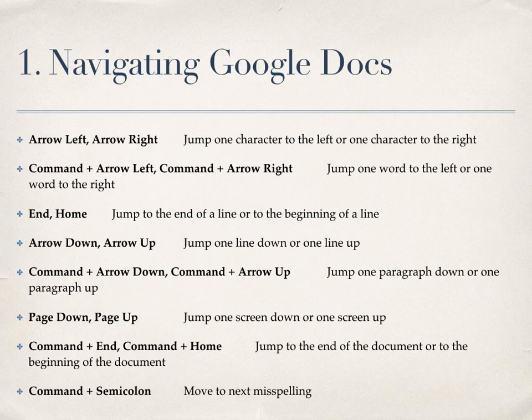Navigating Google Docs. Jump one character to the left or one character to the right: Command plus Arrow Left, Command plus Arrow Right. Jump one word to the left or one word to the right: End, Home. Jump to the end of a line or to the beginning of a line: Arrow Down, Arrow Up.